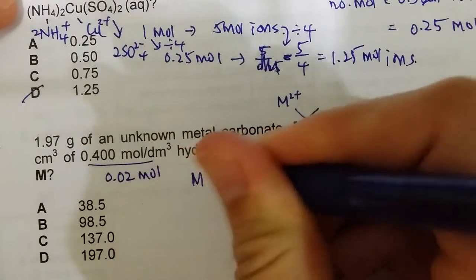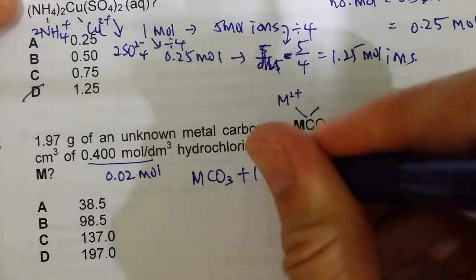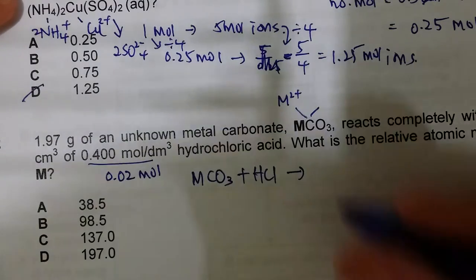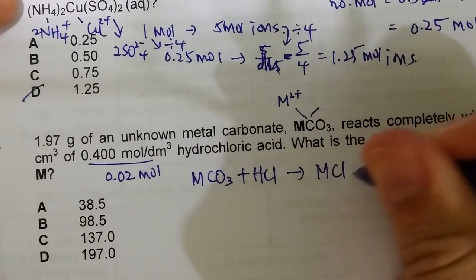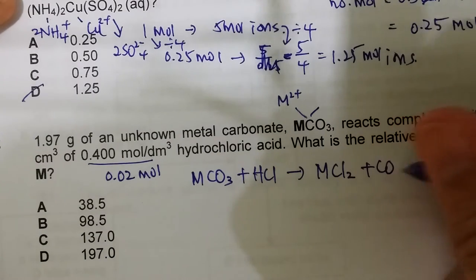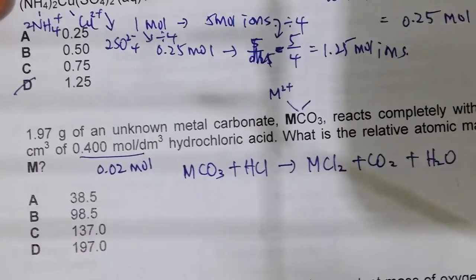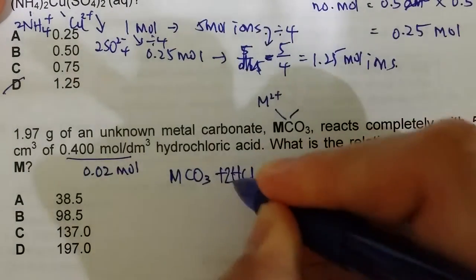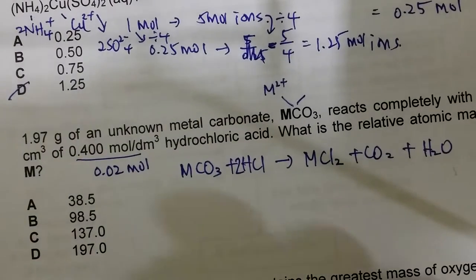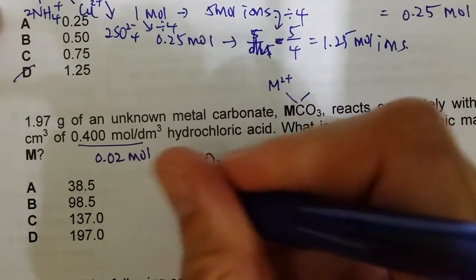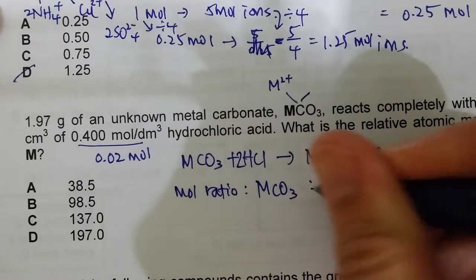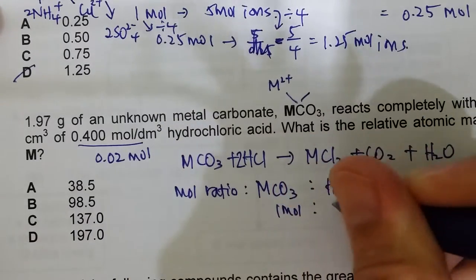Write the chemical equation: MCO₃ + HCl → MCl₂ + CO₂ + H₂O. M is 2+ and Cl is minus, so the salt is MCl₂. Balance by placing a 2 in front of HCl. The balanced equation confirms the mole ratio of MCO₃ to HCl is 1:2.